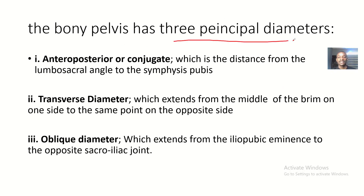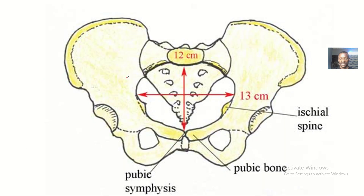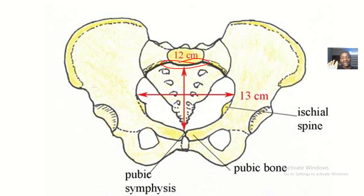The bony pelvis has three principal diameters. We have the anterior-posterior, or conjugate, which is the distance from the lumbosacral angle to the pubic symphysis. The lumbosacral joint is where the last lumbar vertebra joins with the sacrum — the first sacral vertebra. So lumbosacral joint to the pubic symphysis joint.